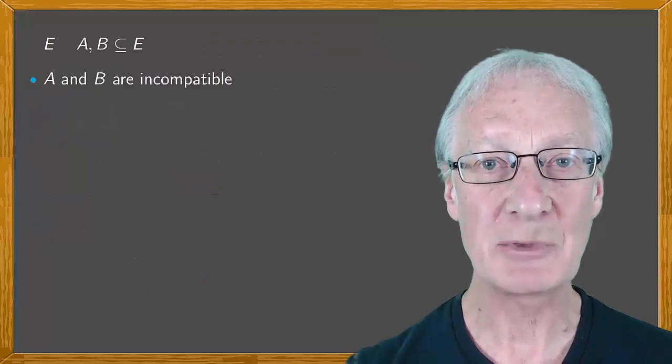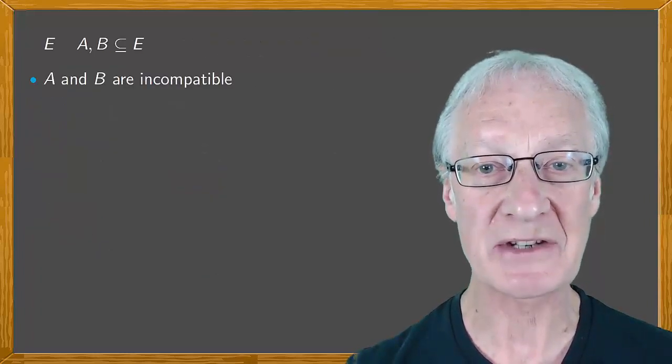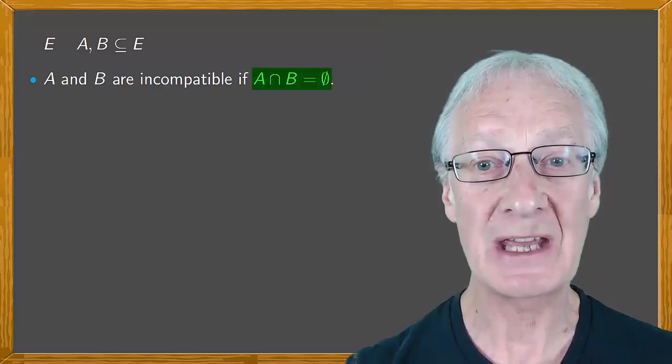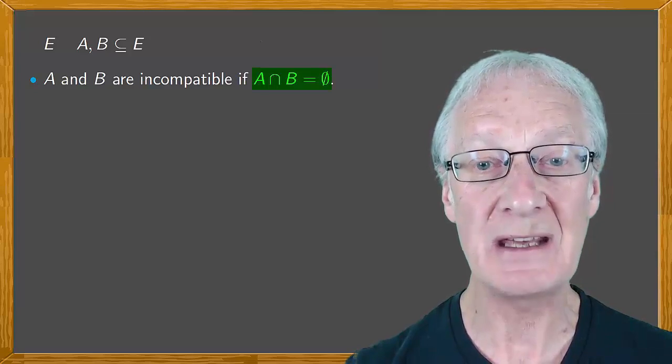Two events are incompatible if they can't occur at the same time. In other words, if A and B is impossible. In this case, A intersection B is the empty set.